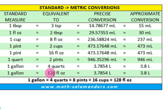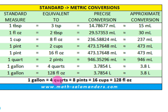If you put all that together, there's 128 ounces in a gallon. One gallon, you could say, is four quarts. You could also say it's eight pints, 16 cups, or 128 ounces.